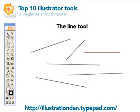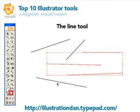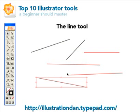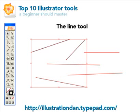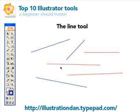You can change the color of these lines. I'll select these three and make these lines red. Then holding shift down you can select other lines and make those blue. It's pretty simple. Let's move on to the next tool.